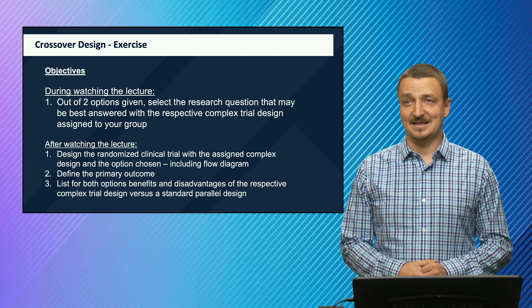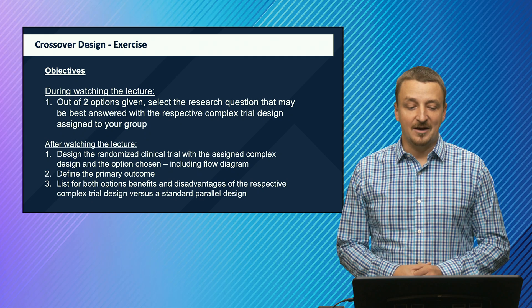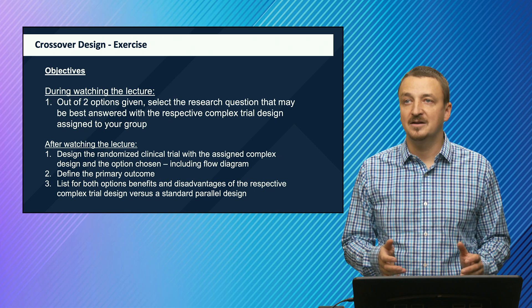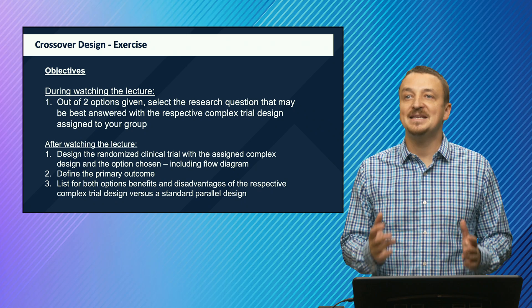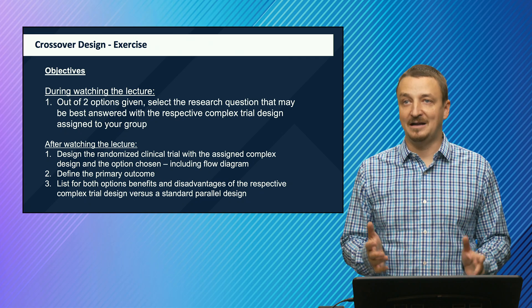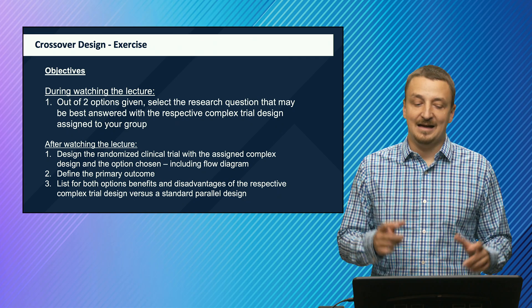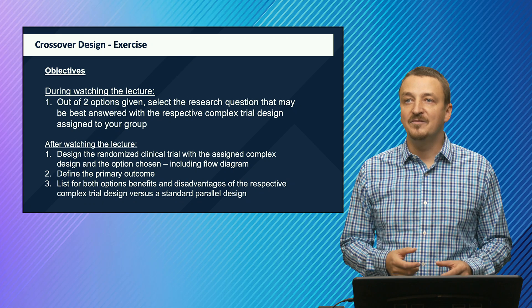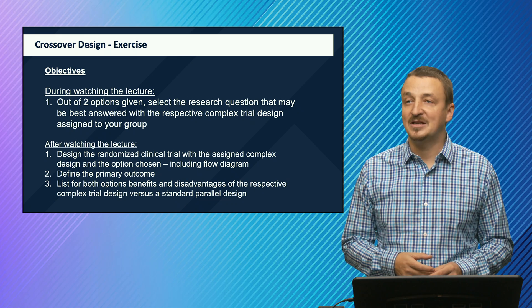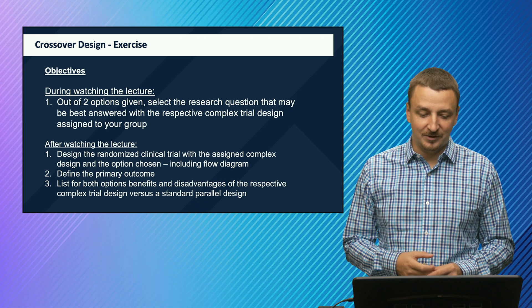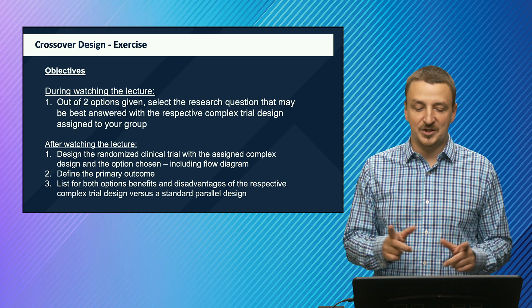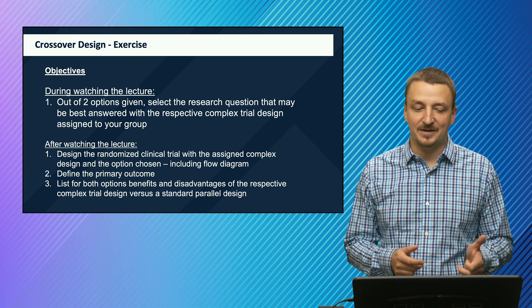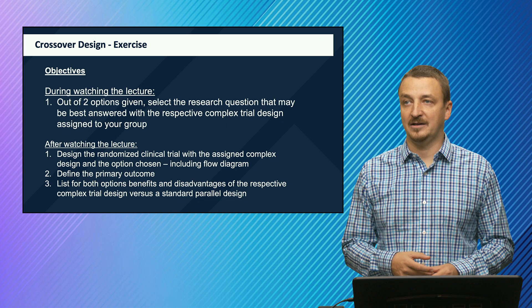This brings me to our exercise. The objective is that during watching the lecture, out of the two options given, please select a research question that may be best answered with the crossover trial design. After watching the lecture, you are asked to design a randomized clinical trial with a crossover design, including the flow diagram, define the primary outcome, and list for both options the advantages and disadvantages of the crossover design versus a standard parallel design.